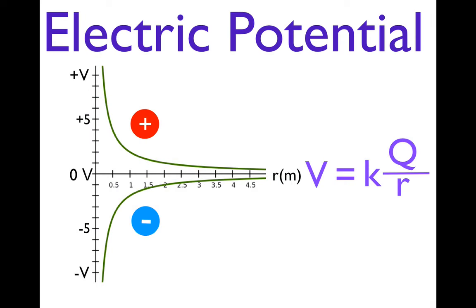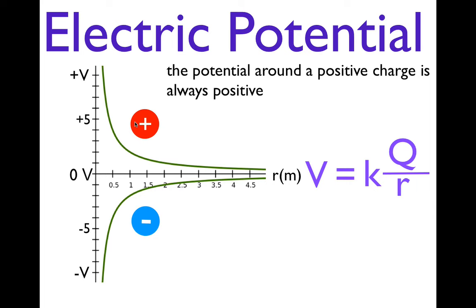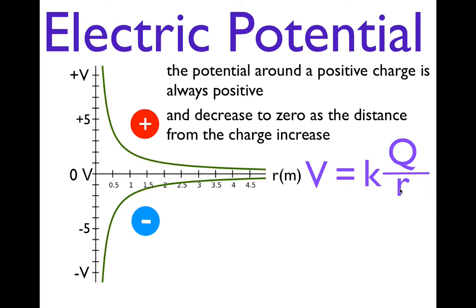Here's a graph of electric potential versus distance away from the charge. Using V = kQ/r, because there's only one Q here, if we have a positive charge, the potential around it is always positive. As you move away from the charge and the distance increases, the potential gets less positive — it decreases toward zero. If you're infinitely far away, the potential is zero, because dividing the charge by infinity gives zero.